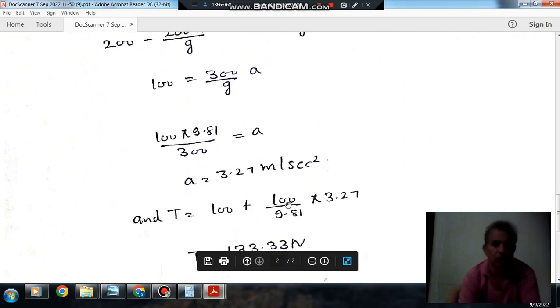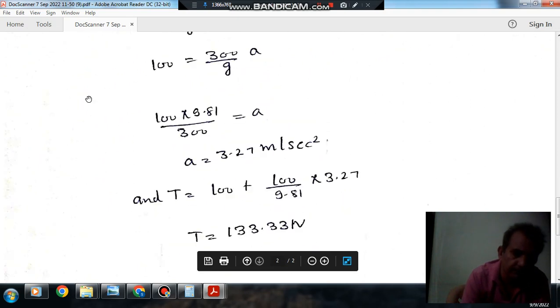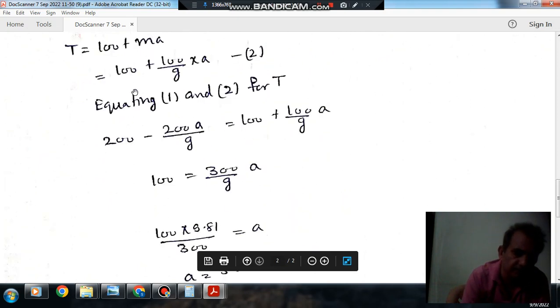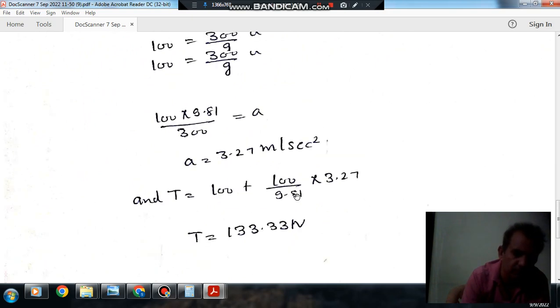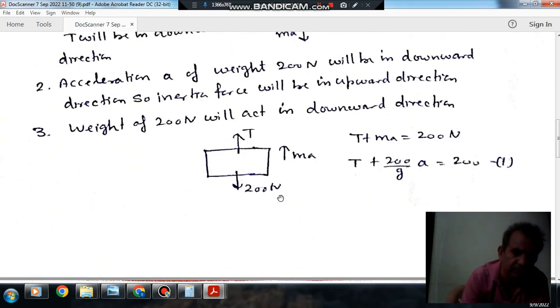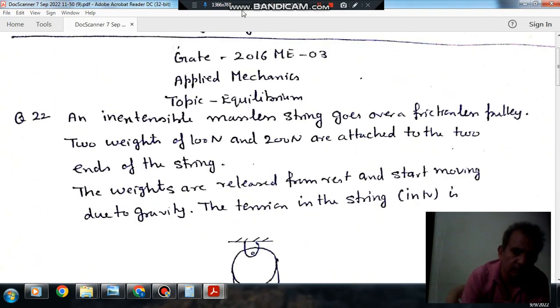Now we can put the value of A in this equation to find out tension. Tension comes out as 133.33 newton. So the answer is 133.33 newton.